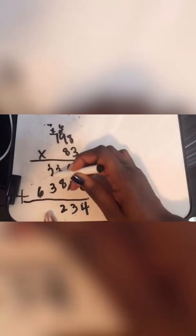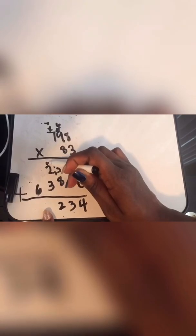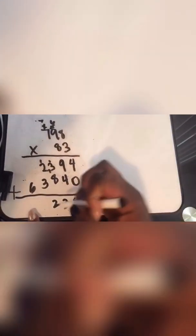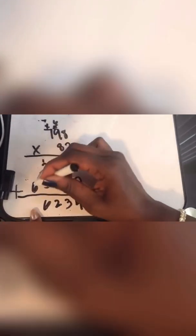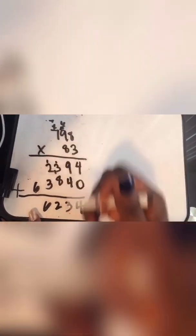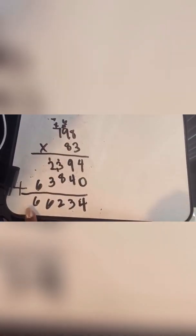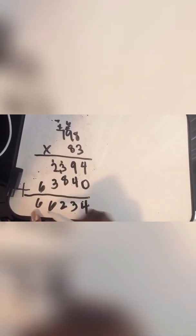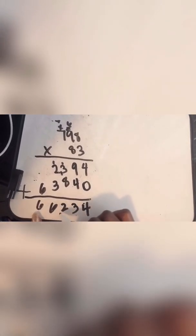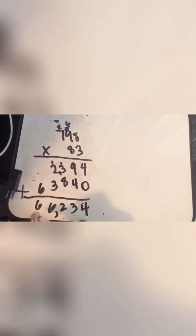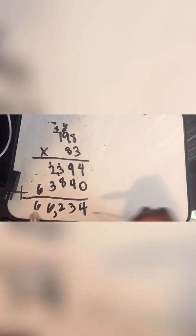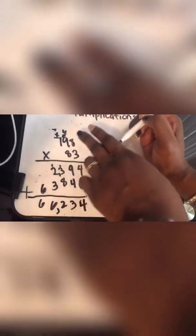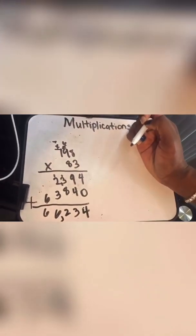We're going to say two plus three is five plus that one up there is six. Six plus an empty number up there is six. And it's also considered as zero up there as well. So we're going to put the comma, one, two, three, four, actually two right here. So 66,234 is the answer to this three digit by two digit right there.